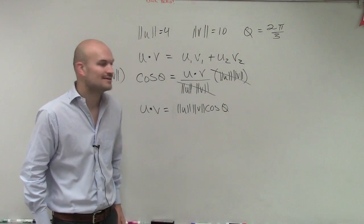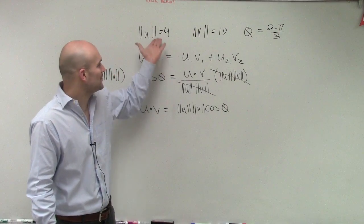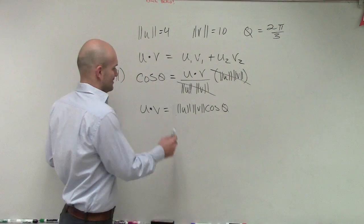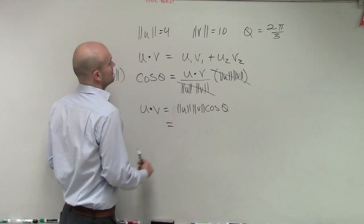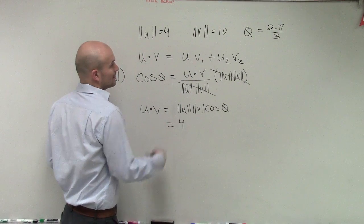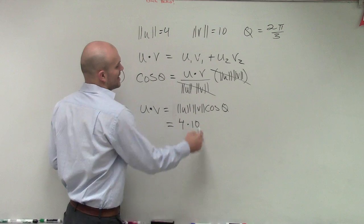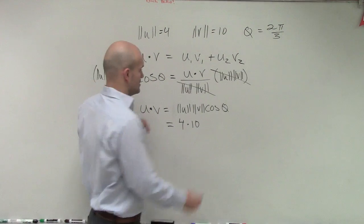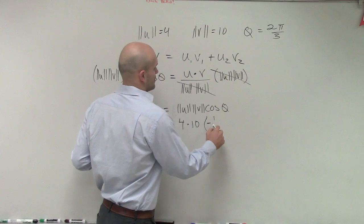So, if you look at this, you say, oh, we know this. We know that, and we can evaluate that. 4 times 10 times the cosine of 2 pi over 3, which is? I don't know, but it equals. Oh, it's negative 25.